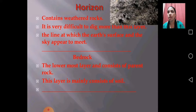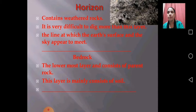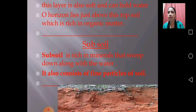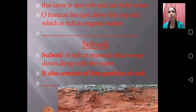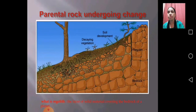Horizon contains weathered rock and it is very difficult to dig beyond this layer. The line at which the earth's surface and the sky appear to meet is called the horizon. Bedrock is the lowermost layer and consists of parent rock. This layer is mainly soft and can hold water. Subsoil is rich in minerals that seep down along with water, and it also consists of fine particles of soil.